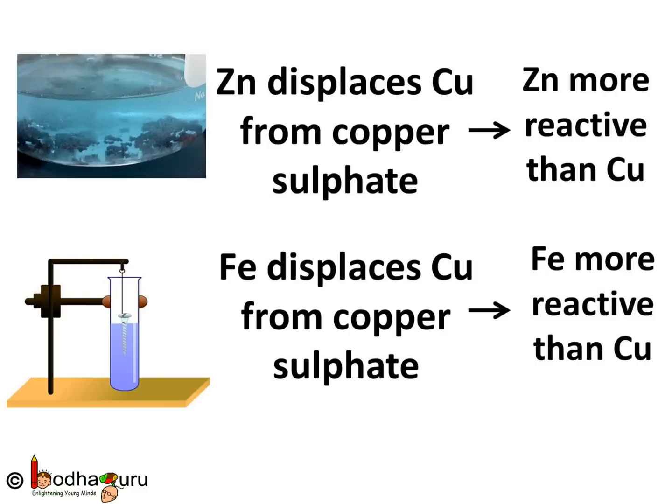So we see — zinc displaces copper from copper sulfate, and iron displaces copper from copper sulfate. Thus, we can say: in a displacement reaction, a more reactive element displaces a less reactive element from its compound.